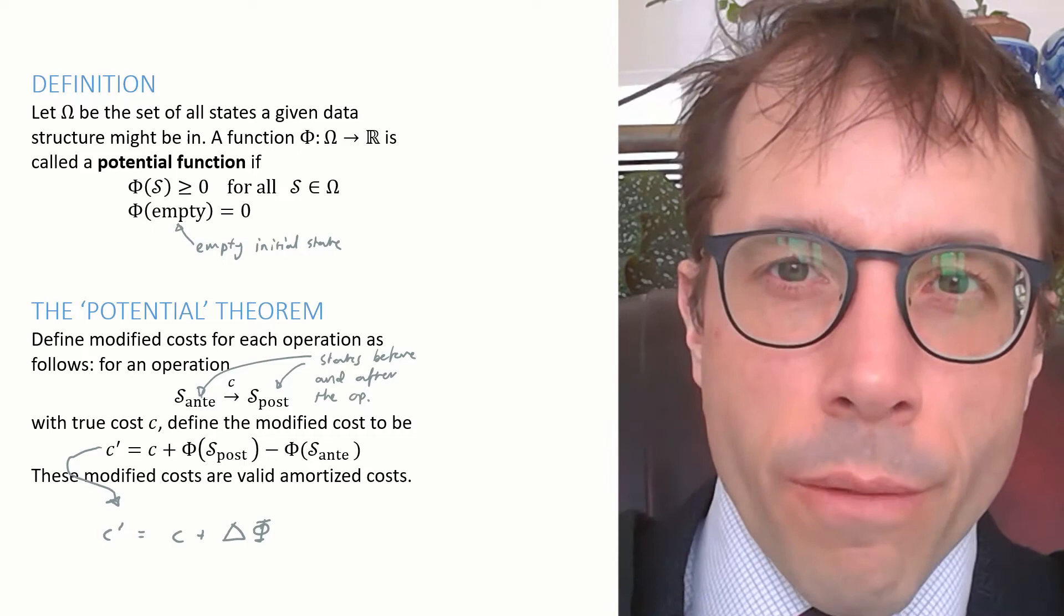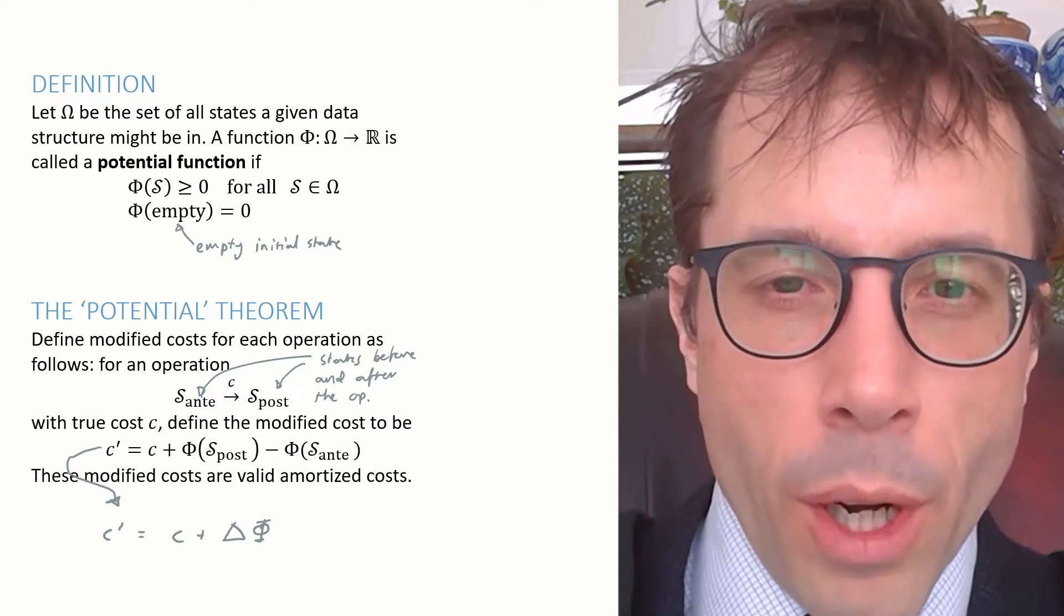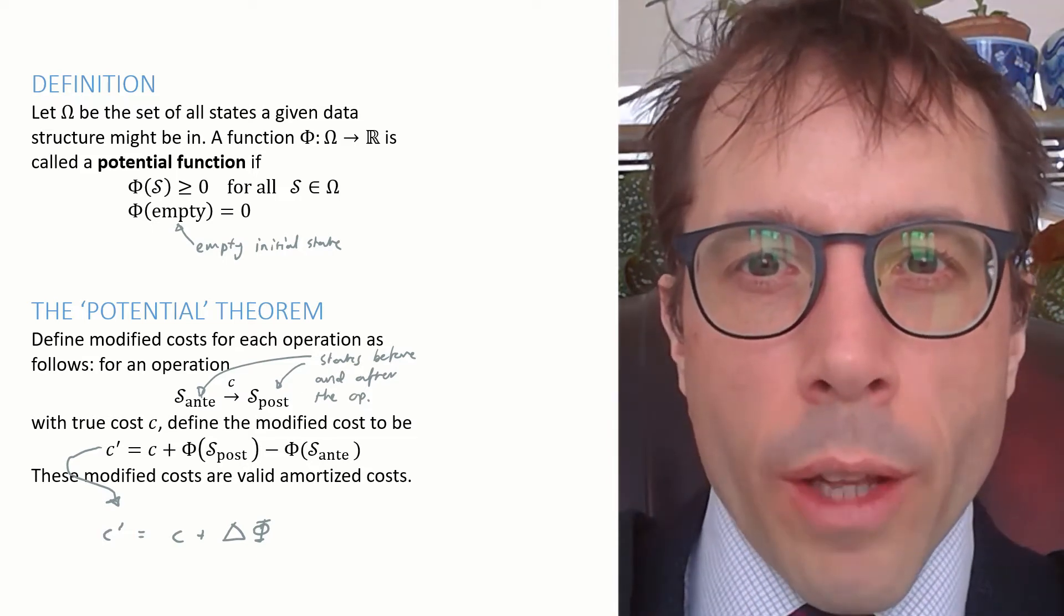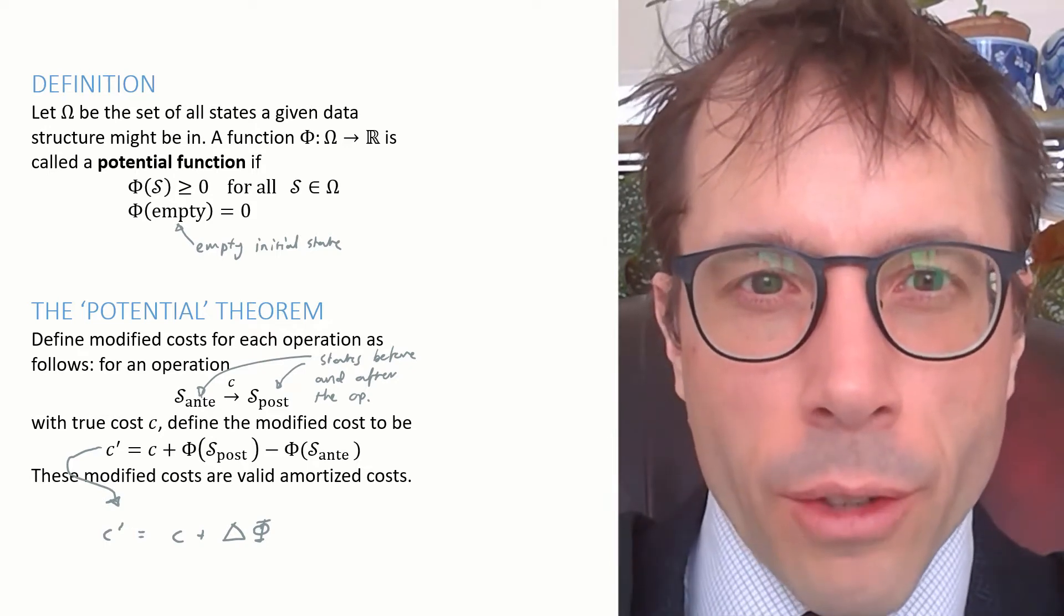Third, this equation, the equation that defines the amortized cost C', this is the shorthand way that we'll usually write it out. C' equals C plus delta phi.